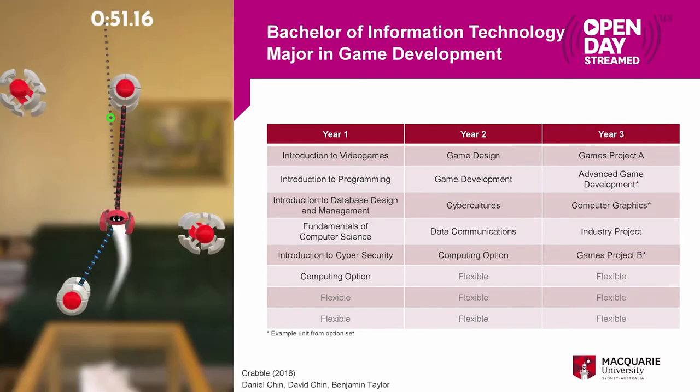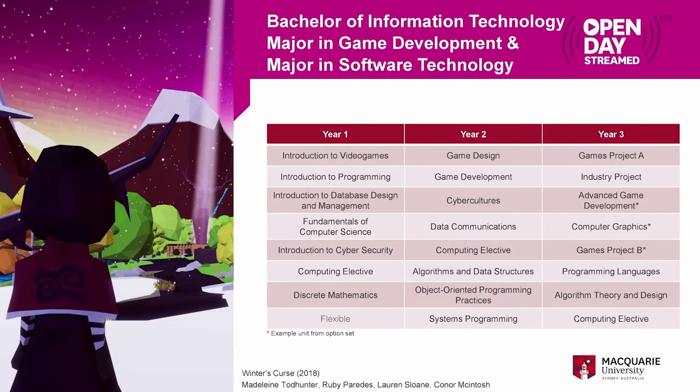The Bachelor of Information Technology with a major in game development has many of the same games units, but on a foundation of the BIT with foundational computer programming units included. It also has a lot more flexible space. Many people use this to do a double major — for example, pairing game development with a major in software technology, filling those eight flexible units with more programming-focused units. This is a great option if you're keen on the technical side and interested in deep computer programming ideas, and it gives you that second string to your bow.